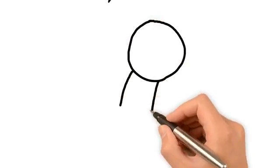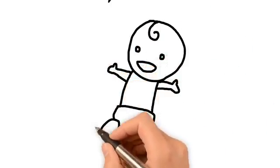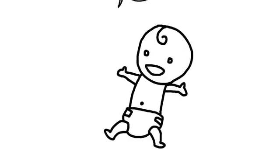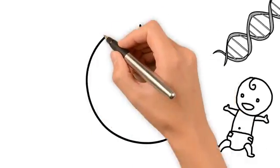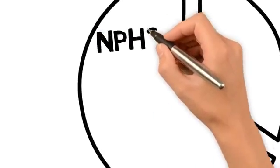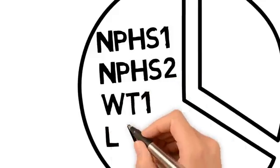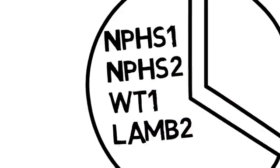Direct exon and next-generation sequencing techniques have demonstrated that in some populations, children who present with nephrotic syndrome before the age of one have a 66% chance of carrying a mutation in one of four genes, namely NPHS-1, NPHS-2, WT-1, and LAMB-2.